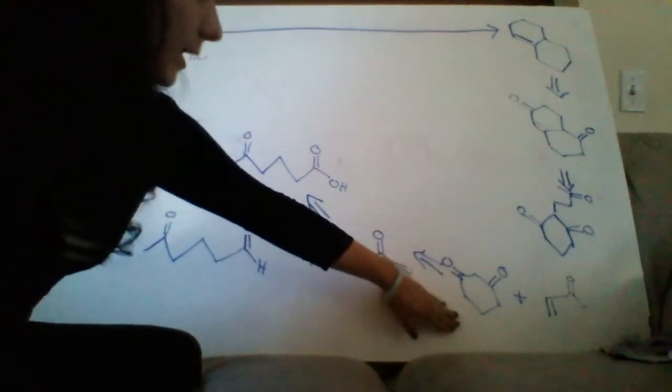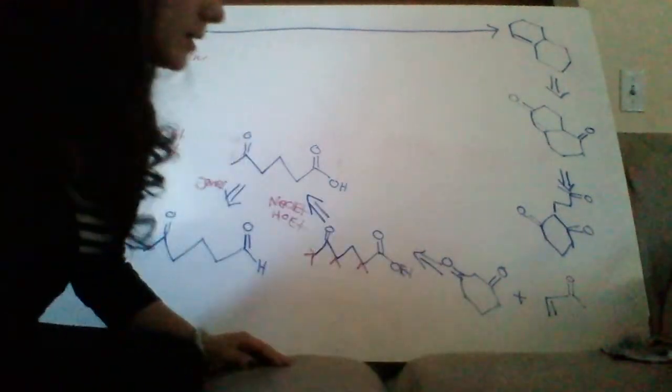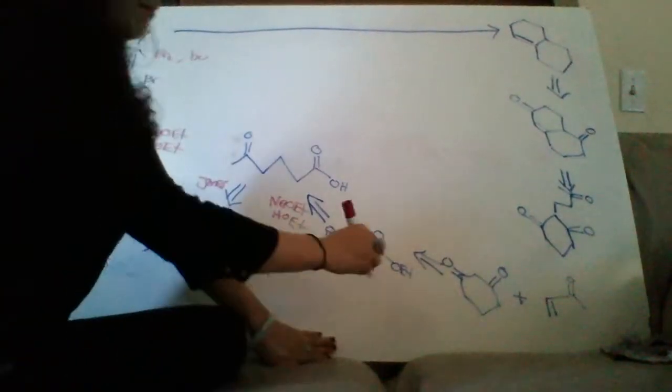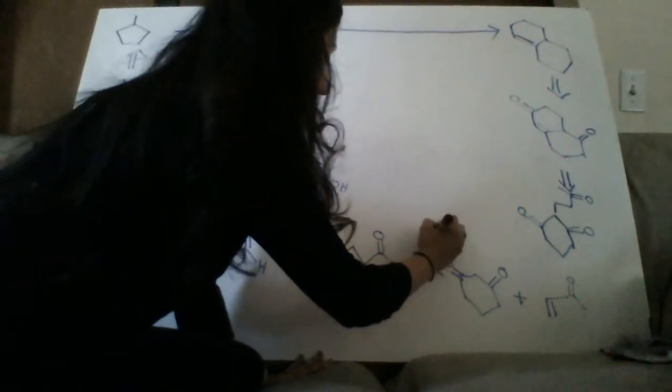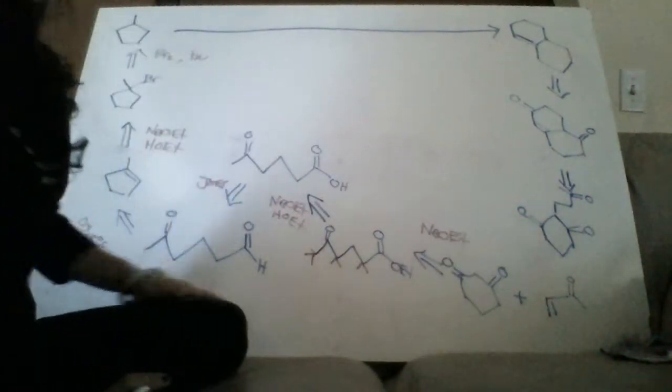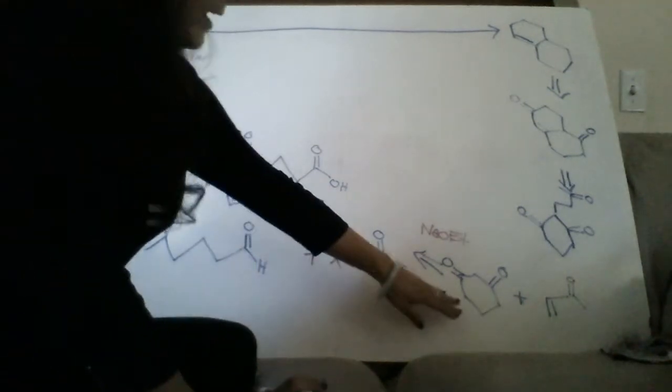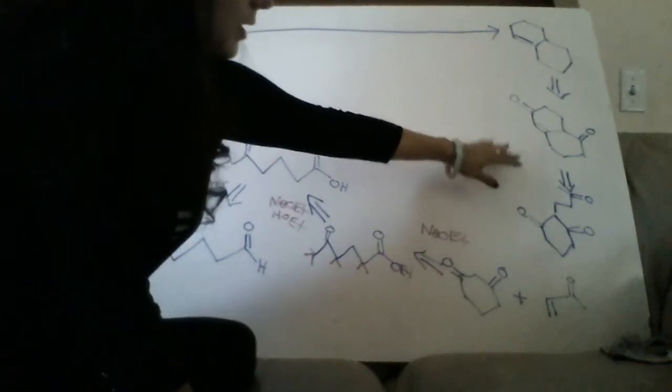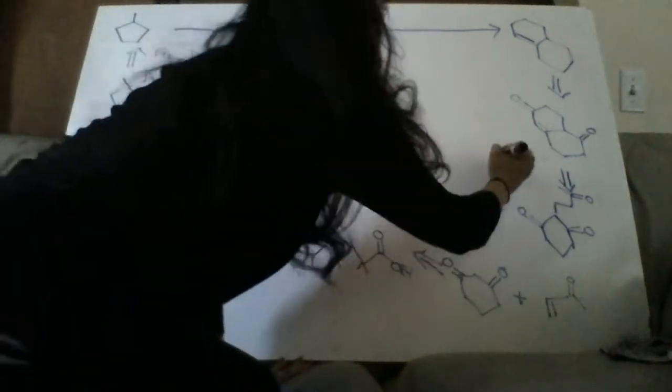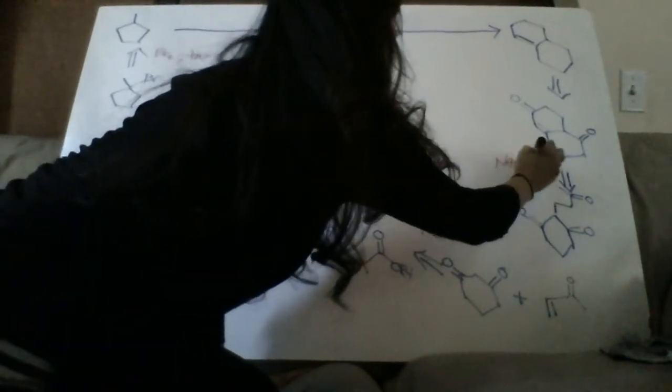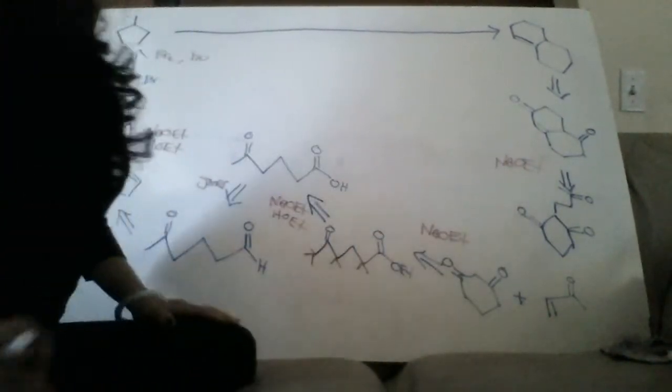And then the next step we get this. We want to do a Michael addition. So again I'm going to need a base here. I'll go ahead and use to be consistent the same base. Next step we need to add a base to have the intramolecular aldol. So these are kind of all the same step.